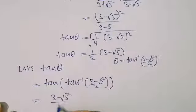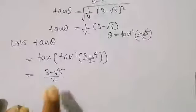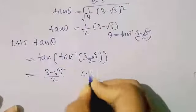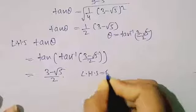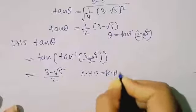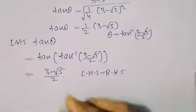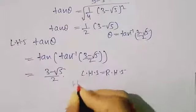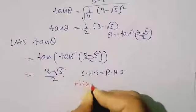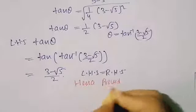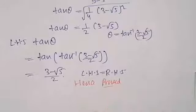The LHS was tan θ, so substituting: tan(tan⁻¹((3 − √5)/2)) = (3 − √5)/2, since tan and tan⁻¹ cancel. This equals the RHS, so LHS = RHS. Hence proved.